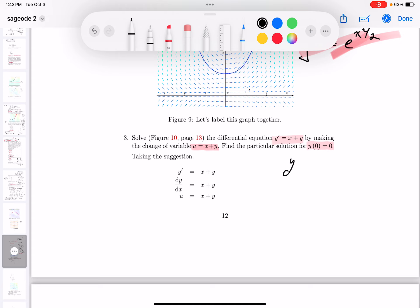We got y prime is equal to x plus y. Then they said make a substitution. Now before I do that, I want to write down dy/dx is equal to x plus y. Now let me go over here and say the substitution is u equals x plus y.